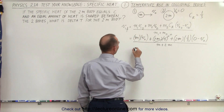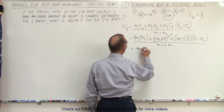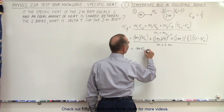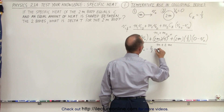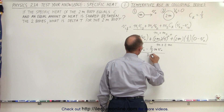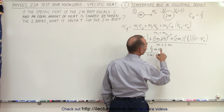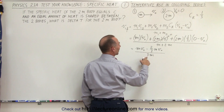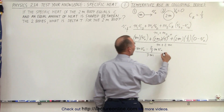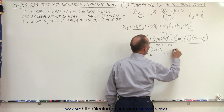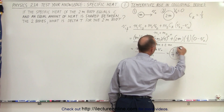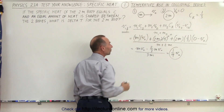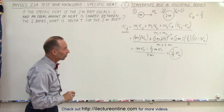That gives us the following: m·v-initial minus two-thirds·m·v-initial, divided by 3m. Two-thirds over 3 would be one-ninth; the m's cancel out, which gives us v1-final equal to one-ninth v-initial. So that is the final velocity of the small object.